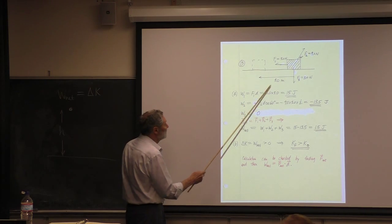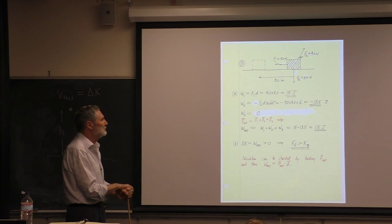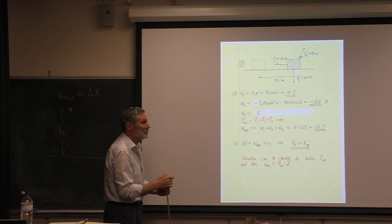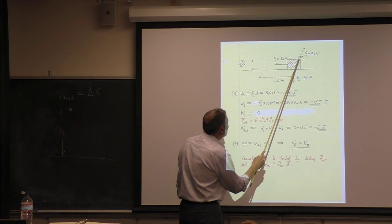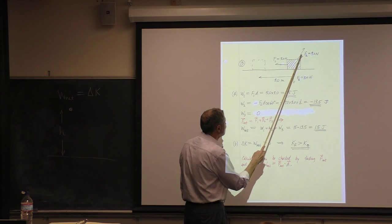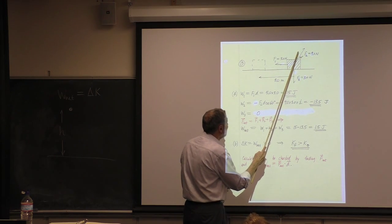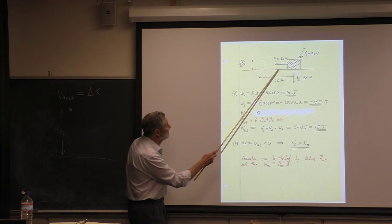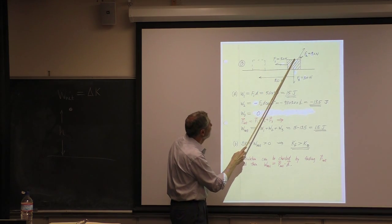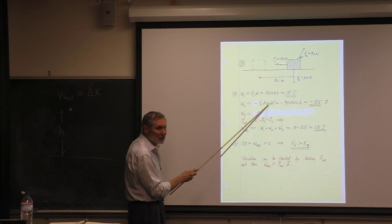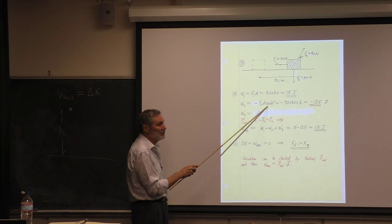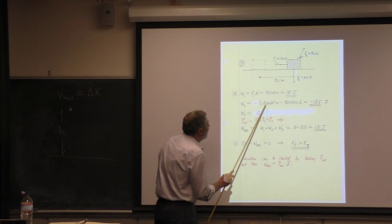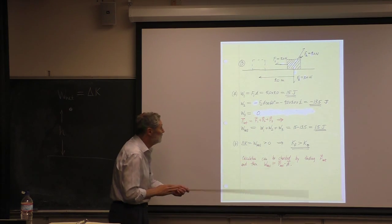The work due to force one: it's a constant force with straight-line displacement in the same direction, so work equals force times distance, positive — 15 joules. For force two, the displacement is this way and the force is another way, so the work must be negative. Using W = F·d·cos(θ), the formula gives a negative number — that's a check that we did it correctly.